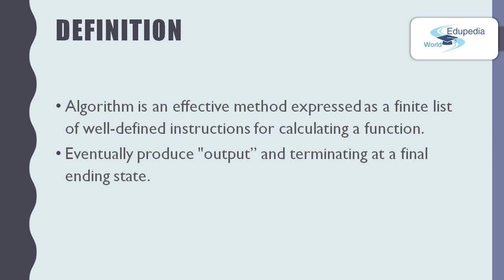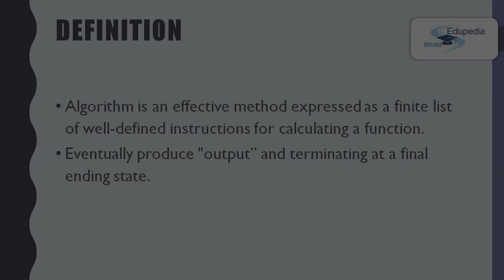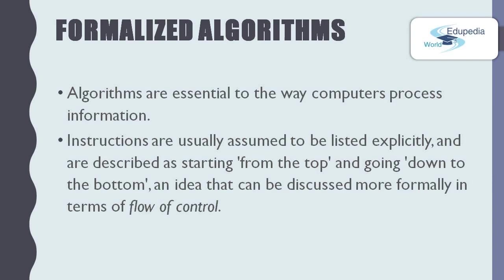These characteristics are important to create an effective algorithm. The order of the computation is always crucial to the functioning of the algorithm, and that's why we make a precise list of precise steps. Instructions are usually listed explicitly, described as starting from the top and going down to the bottom. This idea is described more formally by the key term 'flow of control.'